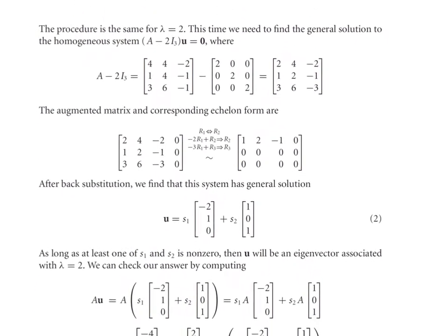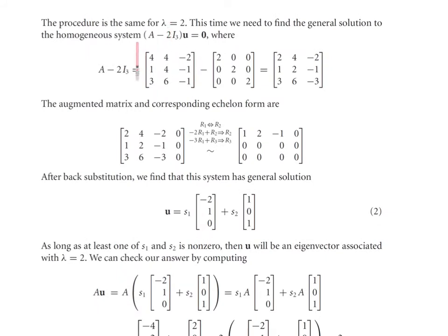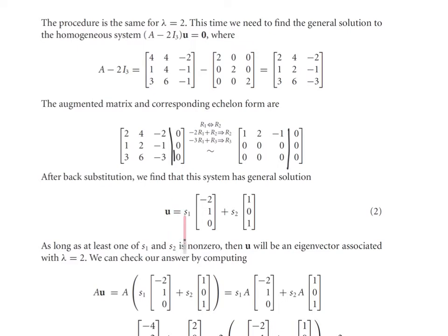Now for lambda equal to 2: we set up the homogeneous system with A minus 2I₃ times U equal to 0. Row reducing gives two free variables — one here and one here. So I need to check two vectors. I use s₁ and s₂ as placeholders to verify the scalar multiple will equal 2.